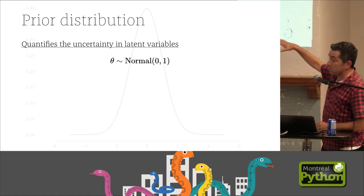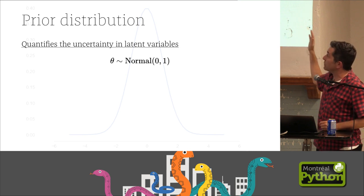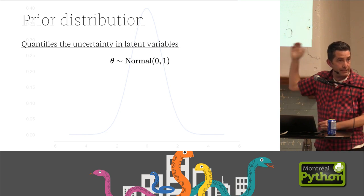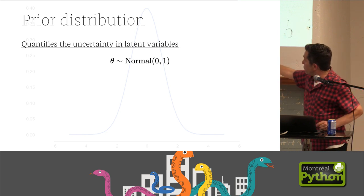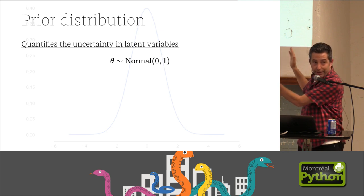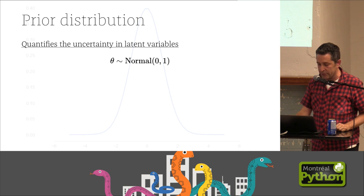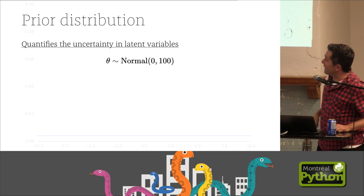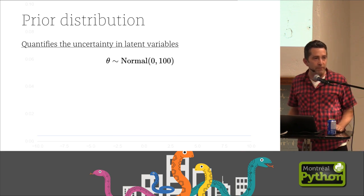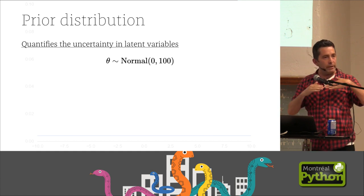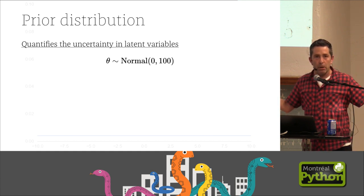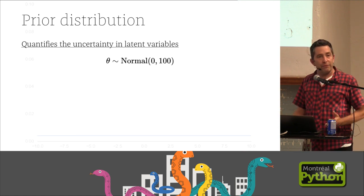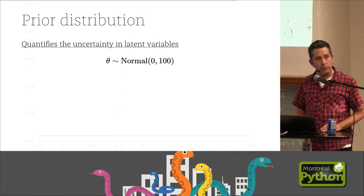So prior distribution generally just quantifies the uncertainty in whatever variables that you're interested in fitting here. So this is a normal distribution with a zero mean and a standard deviation of one. It says we're reasonably sure that things are somewhere between negative three and three with quite a bit of certainty. This is also a normal distribution, that line across the bottom, but it's got a standard deviation of 100. So here we're saying we don't know. It could be essentially any real value almost.